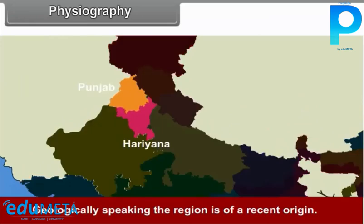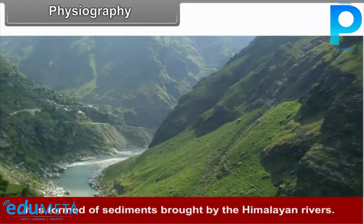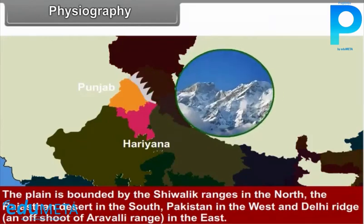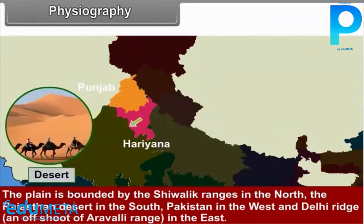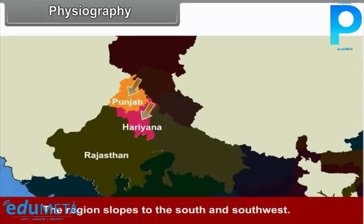4.1 Physiography. Geologically speaking, the region is of a recent origin. It is formed of sediments brought by the Himalayan rivers. The plain is bounded by the Shivalik range in the north, the Rajasthan desert in the south, Pakistan in the west, and the Delhi Ridge in the east. The region slopes to the south and south-west.